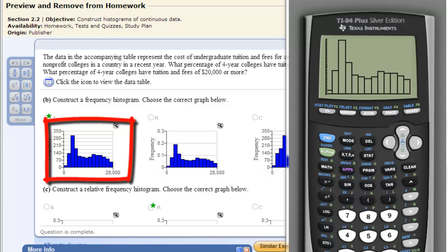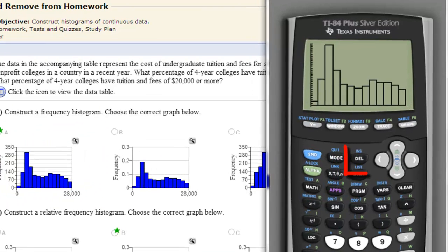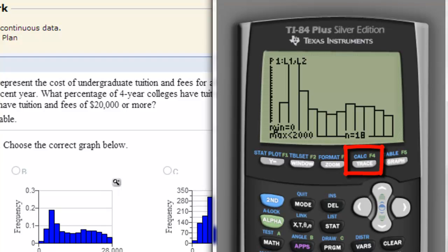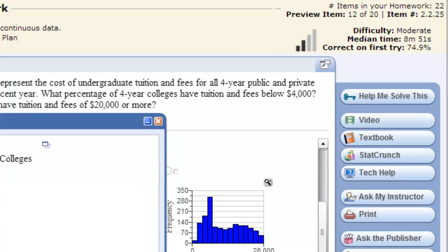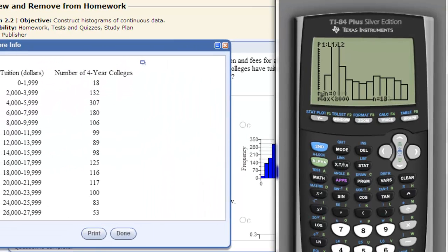We can actually see the numbers on here too if we click trace. Now we can trace it. It says zero is the lower limit up to 2000. If I click over, you can see there's 18 of them, and that's what we had. Click over, 132 to 4,000, and etc. You can go all the way through and see all the information that we see in this plot.